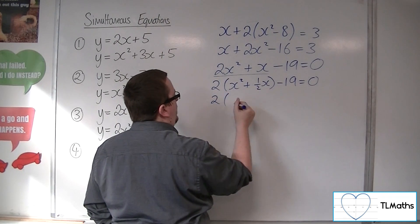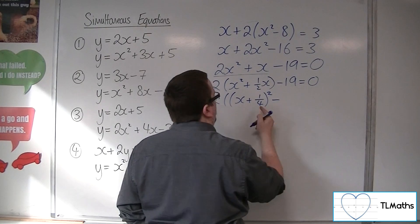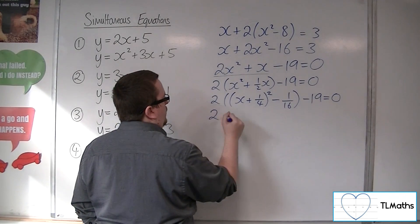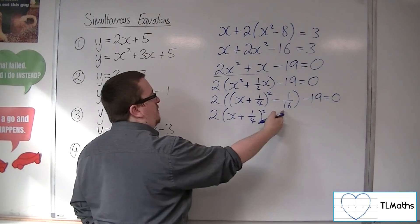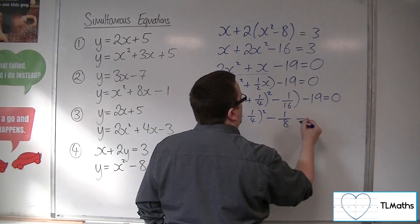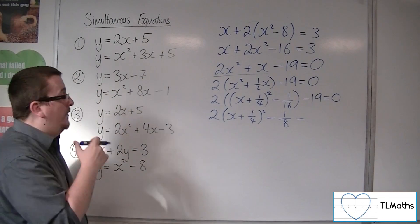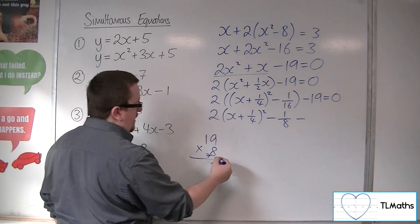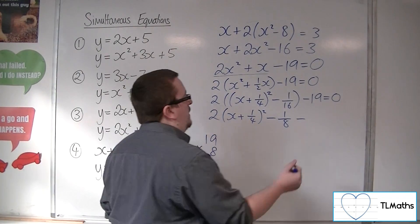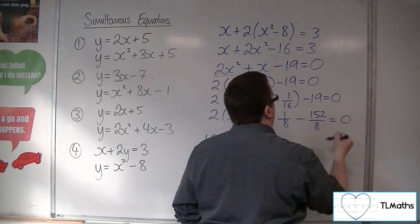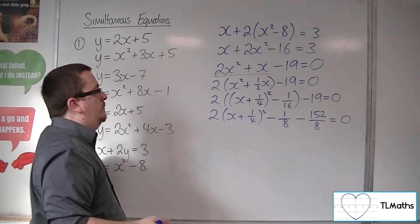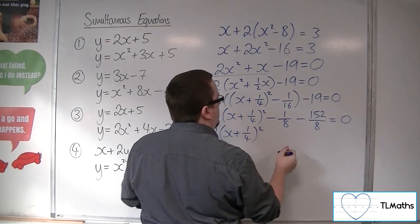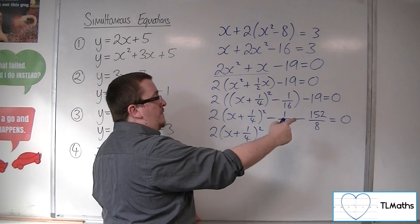Factor the 2 out of the first two terms: 2 lots of (x squared plus one-half x), minus 19 equals 0. Completing the square on the inside: (x plus one-quarter) squared, take away one-quarter squared — so take away one-sixteenth. So we have 2 lots of (x plus one-quarter) squared. Two times minus one-sixteenth is minus one-eighth. Converting minus 19 into eighths: 19 times 8 is 152, so minus 152 over 8. That gives minus 153 over 8.